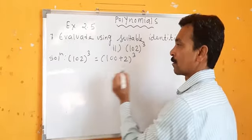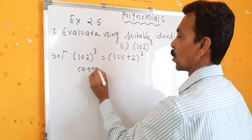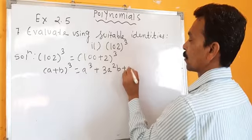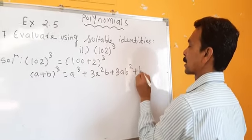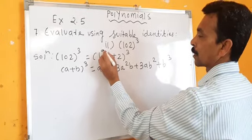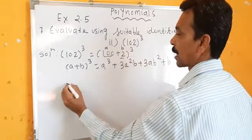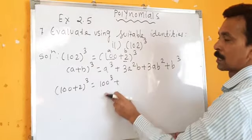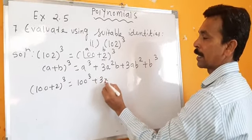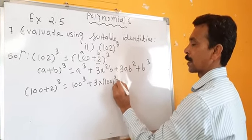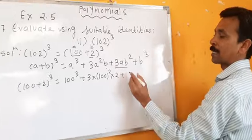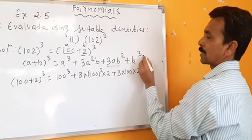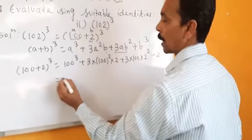We will use the identity A plus B whole cube. A plus B whole cube equals A cube plus 3A squared B plus 3AB squared plus B cube. Here A is 100 and B is 2. So it becomes 100 cube plus 3 into 100 squared into 2 plus 3 into 100 into 2 squared plus 2 cube.